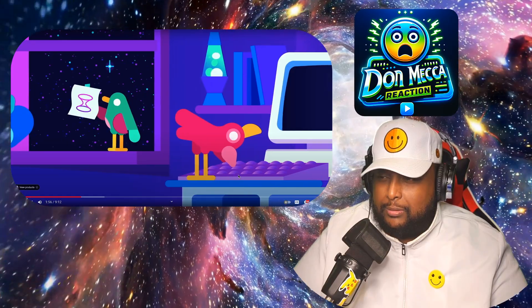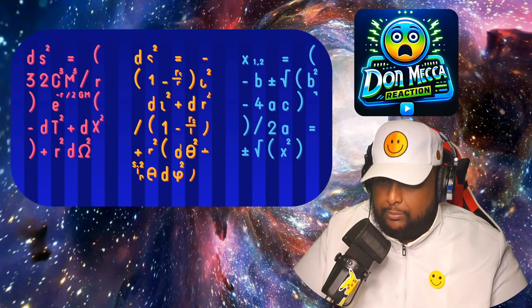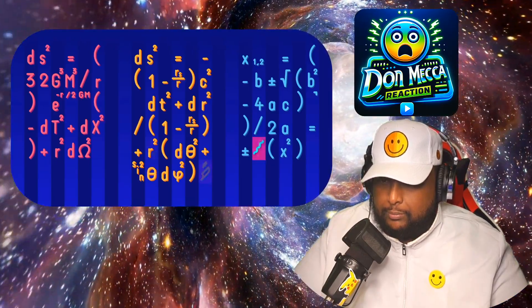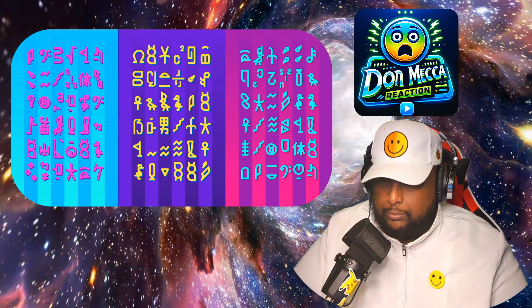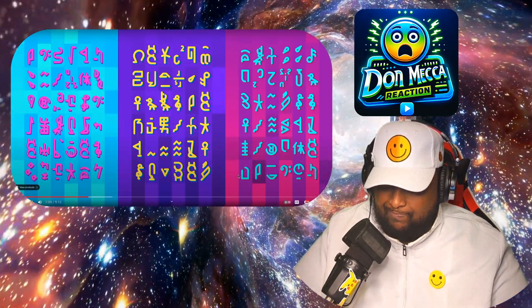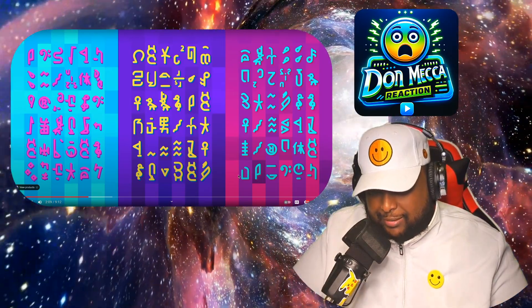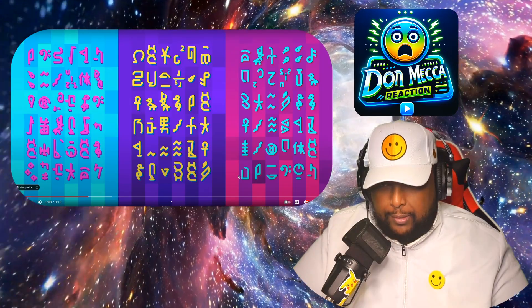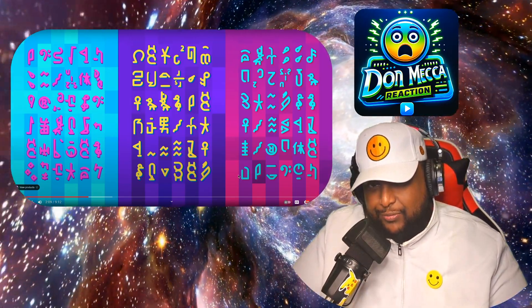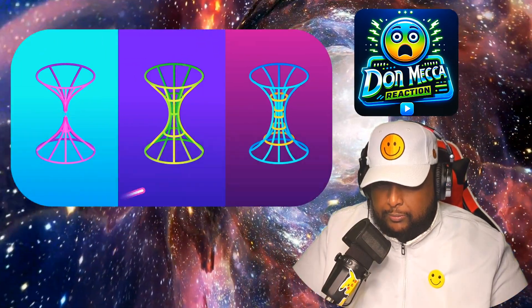General relativity says wormholes might be possible, but that doesn't mean they have to exist. General relativity is a mathematical theory — a set of equations with many possible answers, but not all math describes reality. We could be led astray by paper theories. Things can be true on paper but might not really exist in the physical world. That said, they are theoretically possible, and there are different kinds.